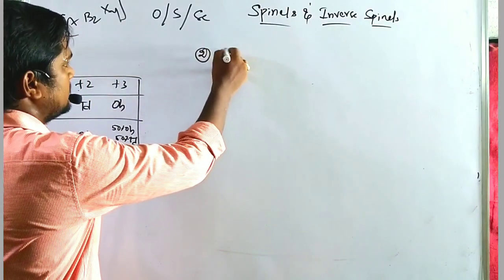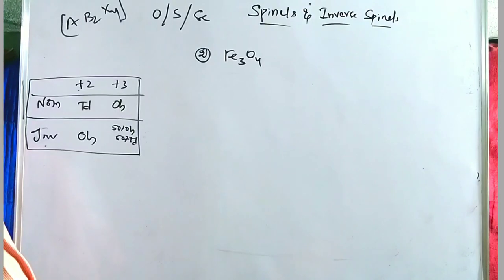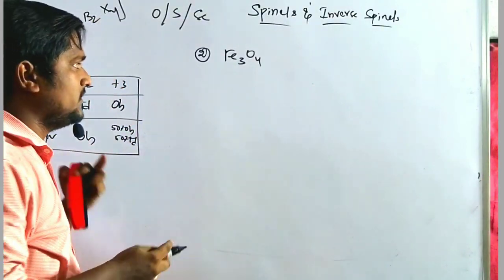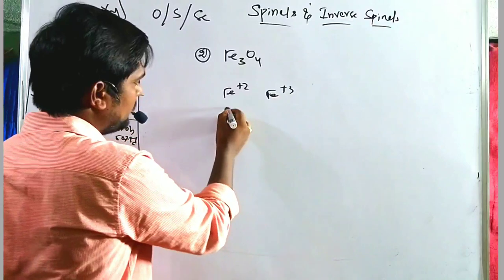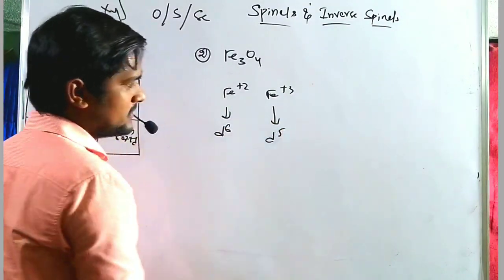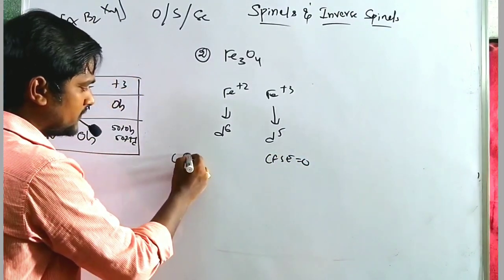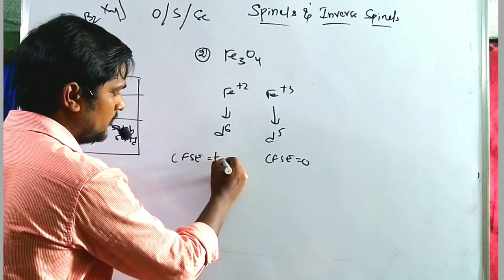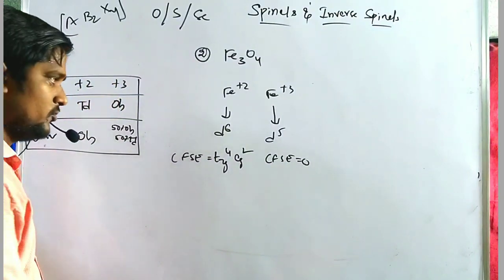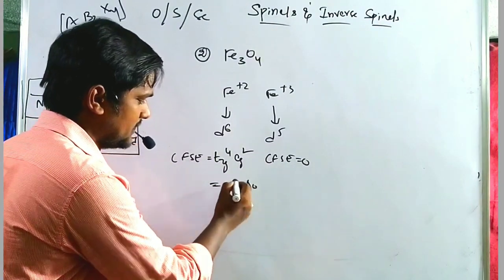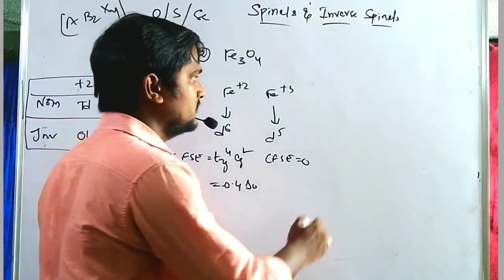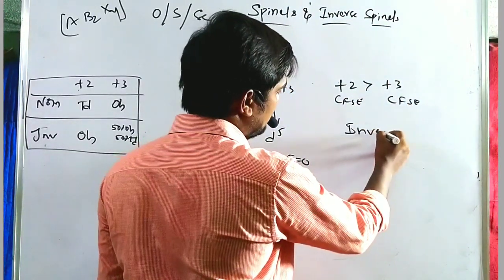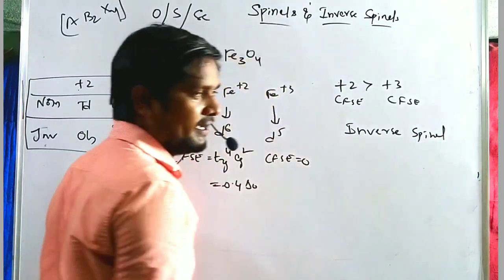Example 2: Fe₃O₄, written as Fe²⁺[Fe₂³⁺]O₄. Fe²⁺ is d⁶ (high spin): t₂g⁴e g²gives CFSE = 4(−0.4) + 2(0.6) = −1.6 + 1.2 = −0.4 Δₒ. Fe³⁺ is d⁵, so CFSE = 0. Since +2 CFSE (0.4 Δₒ) is greater than +3 CFSE (0), it is an inverse spinal.